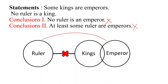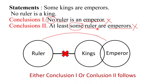In conclusion one the elements are ruler and emperor, and the same elements are there in conclusion two — ruler and emperor — so elements are same in both conclusions. For the third condition, in conclusion one 'no' is present and in conclusion two 'some' is present, so no plus some is our complementary pair. This question satisfies all three conditions of either or, so the answer will be either conclusion one or conclusion two follows.